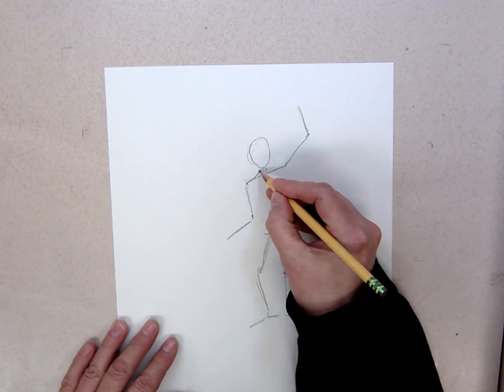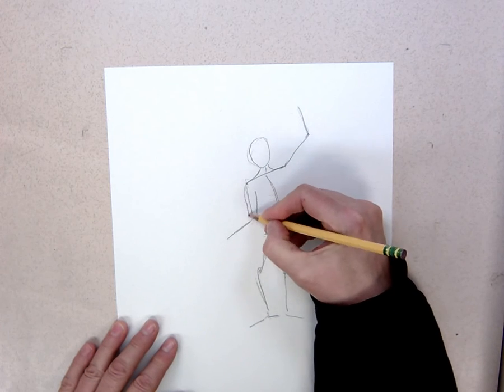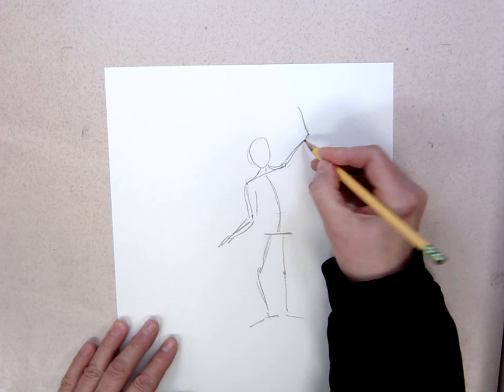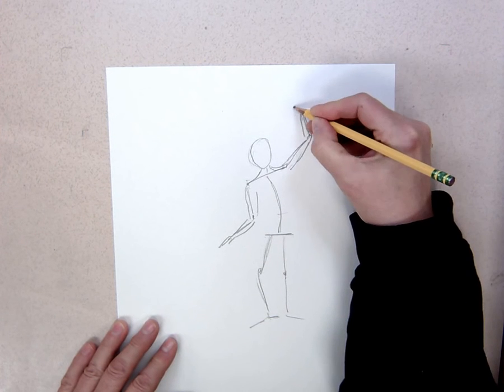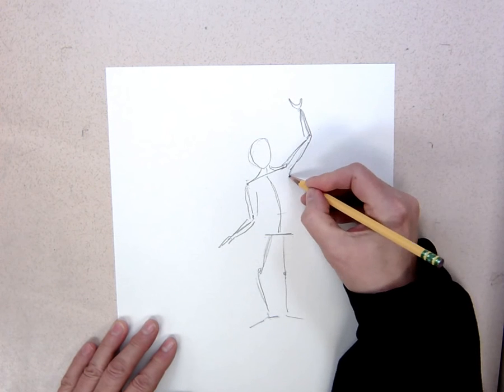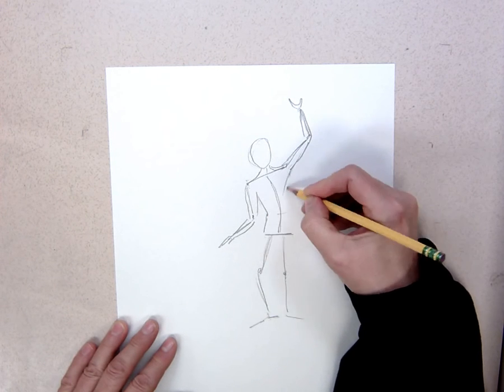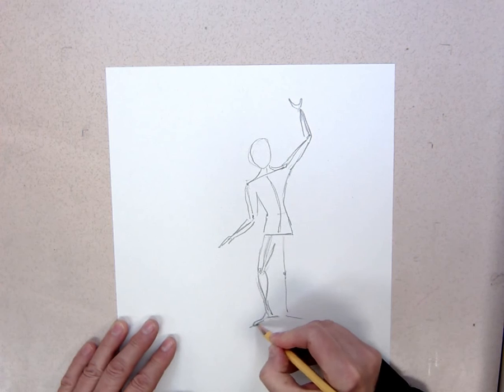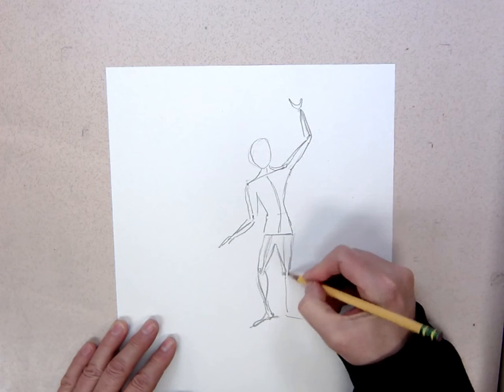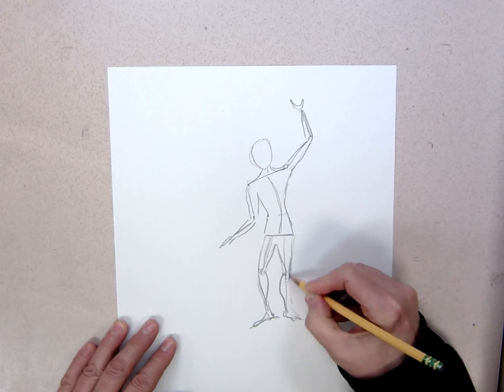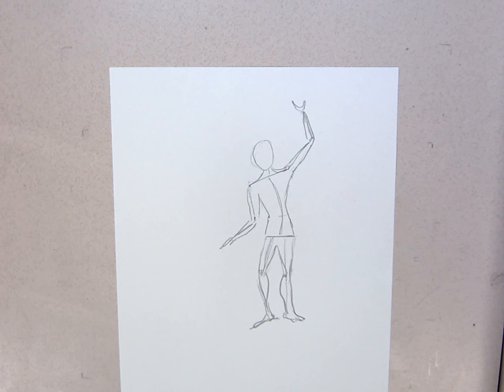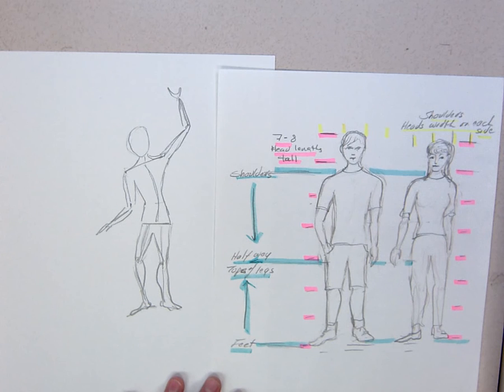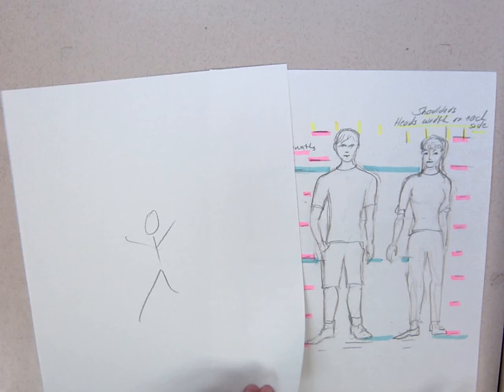And then I have a little skeleton person that is close to correct proportion. Then I can come in here and draw what they're doing with their hand. I'm reaching up to catch something. I give the stick figure some thickness to it, and I get closer to something that is in correct proportion and looks more human.